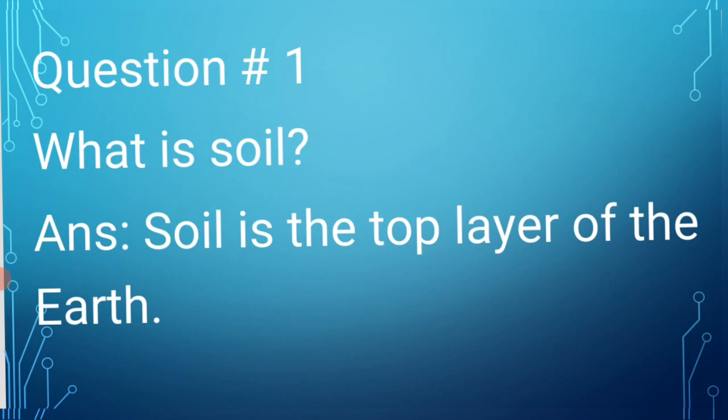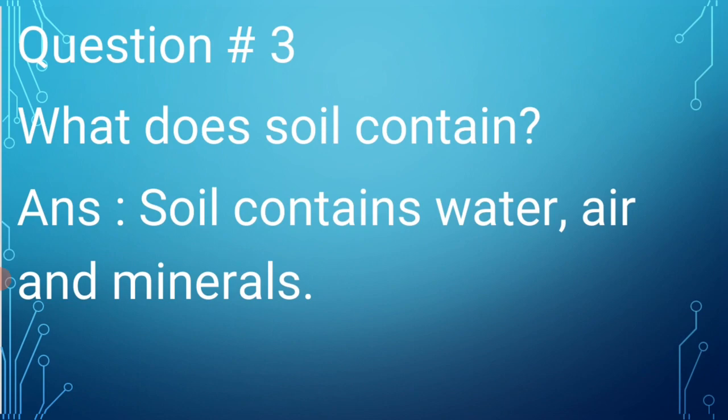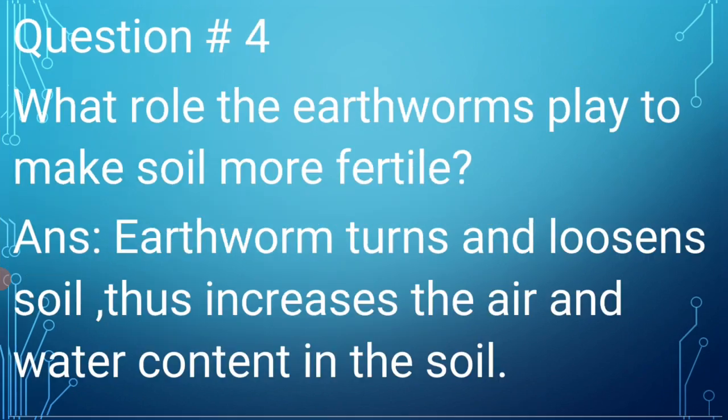To summarize: soil is the top layer of earth, formed by the action of sun, wind, and rain. Soil contains water, air, and minerals. Earthworms also play an important role — they turn and loosen the soil, which increases the air and water content in the soil, making it more fertile.